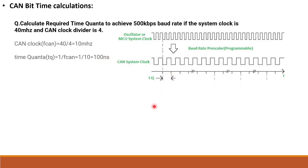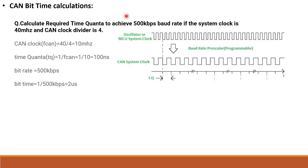The CAN clock frequency is 10 MHz for a 500 kbps baud rate. Bit timing equals 1 divided by the baud rate. With a defined baud rate of 500 kbps, we calculate the bit timing accordingly.